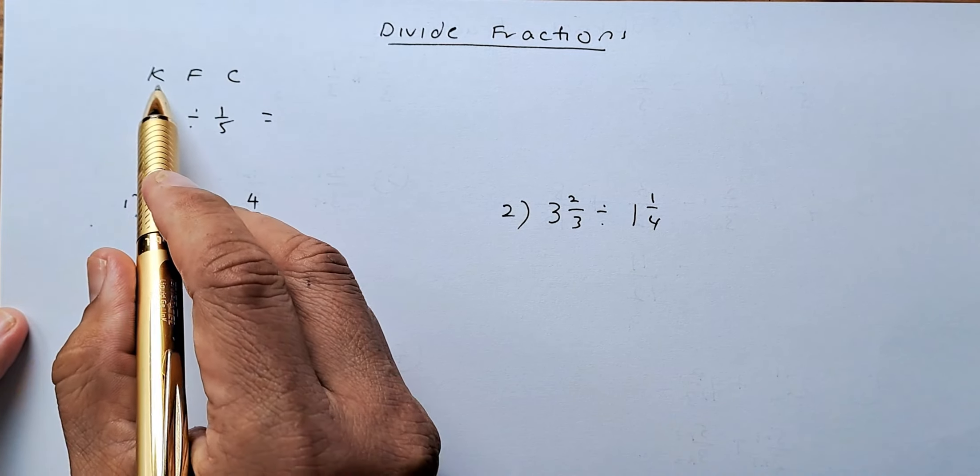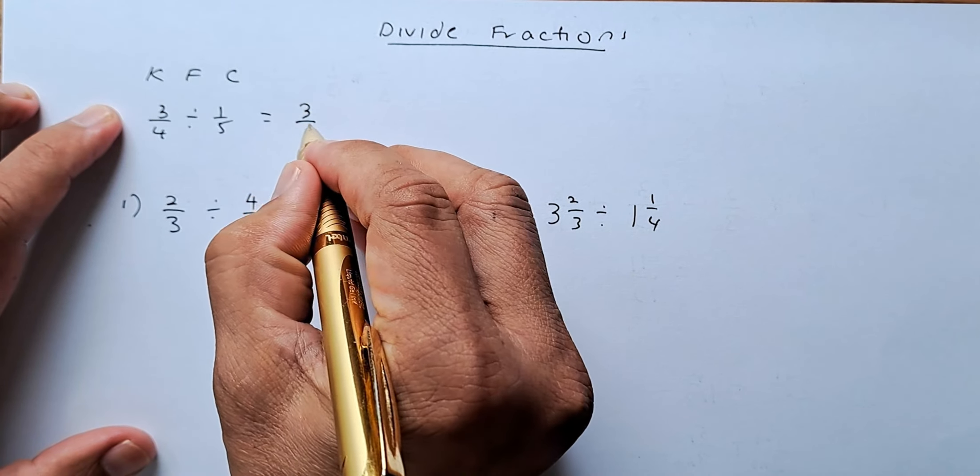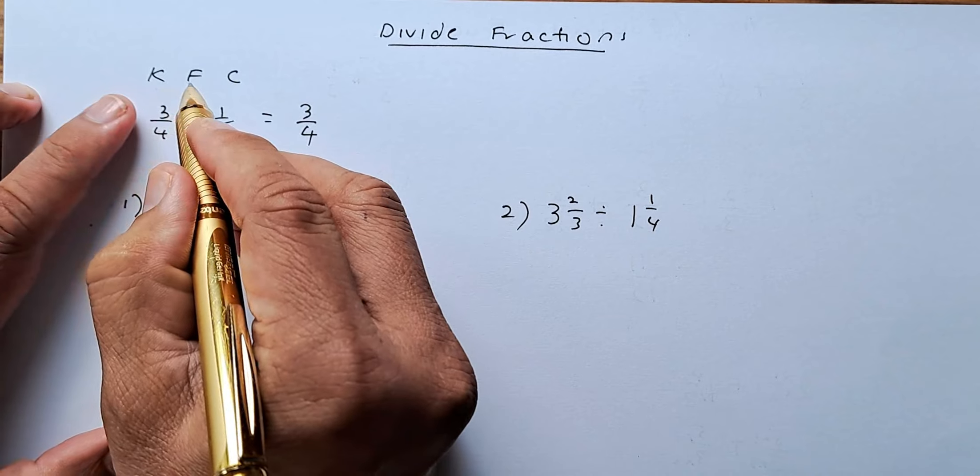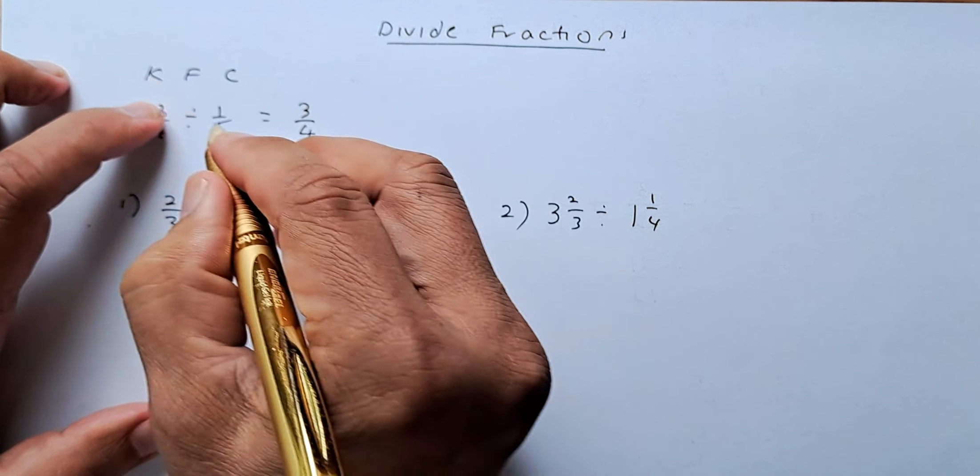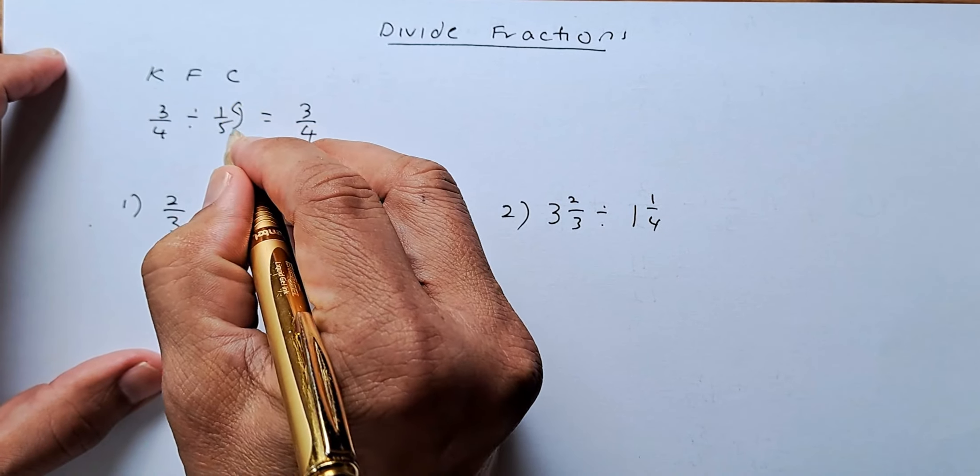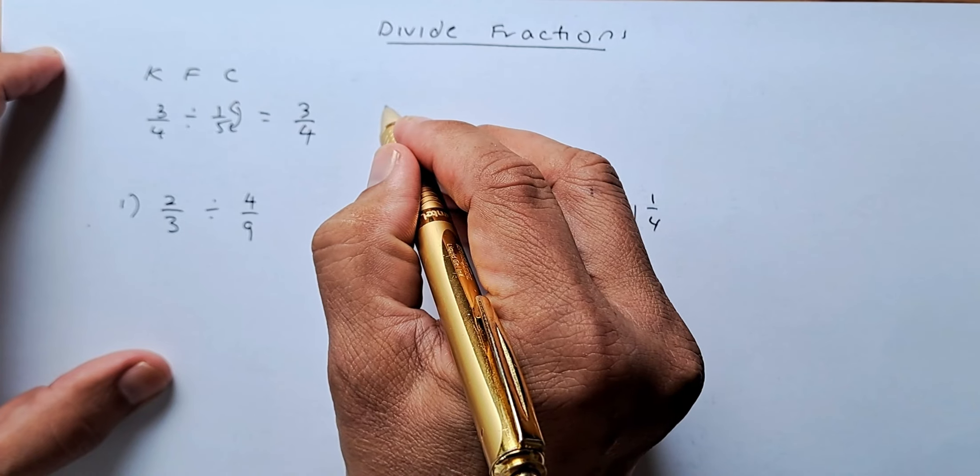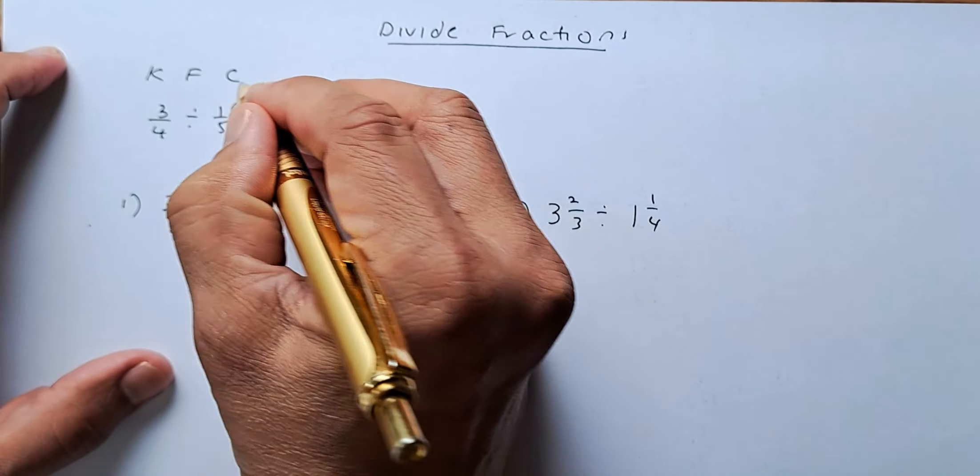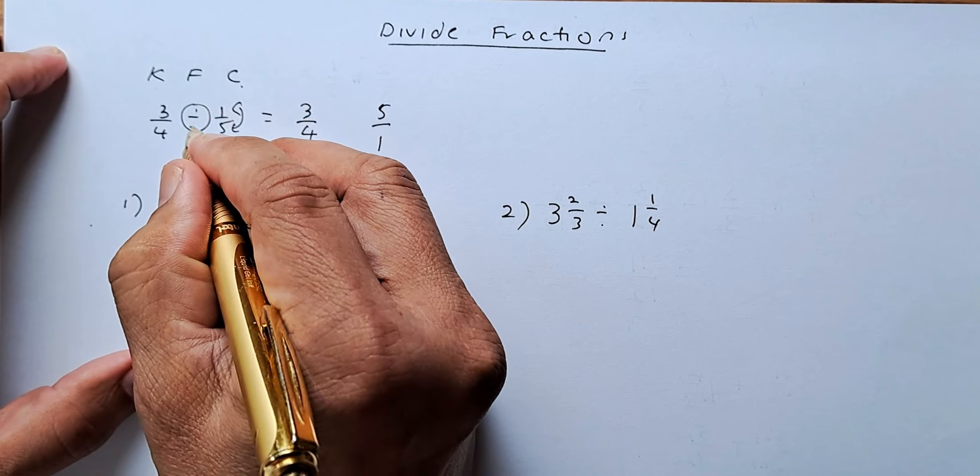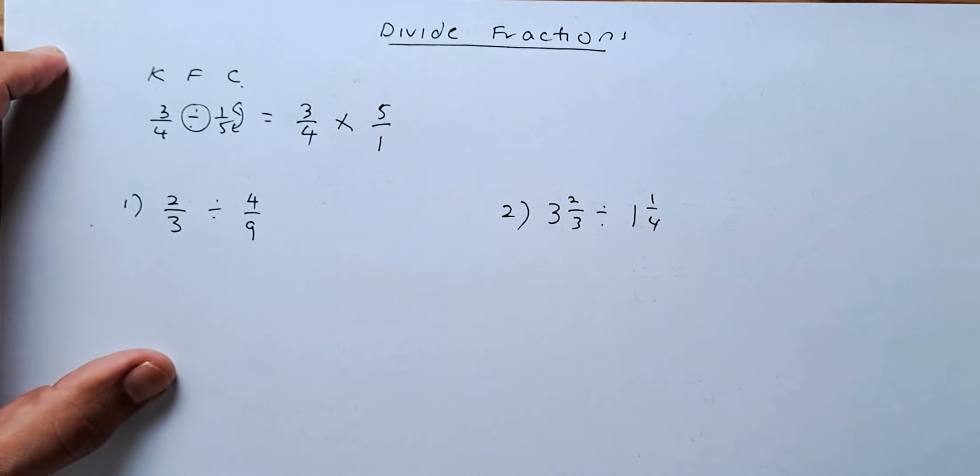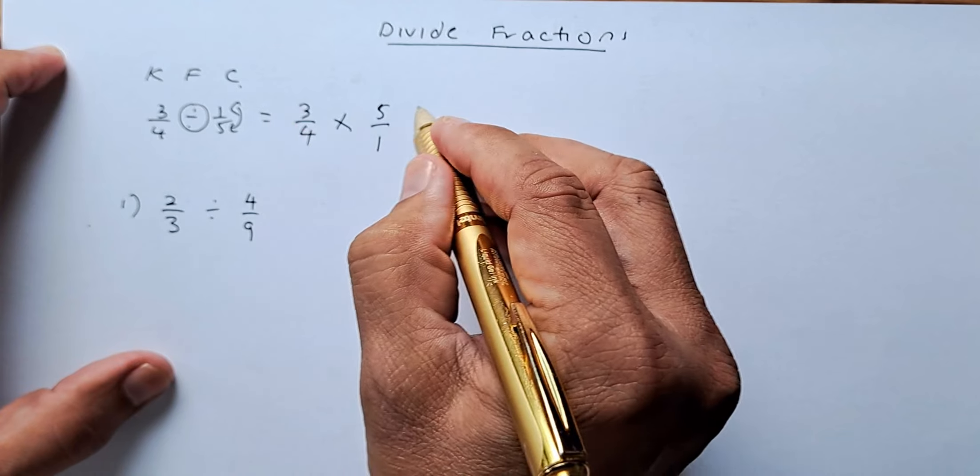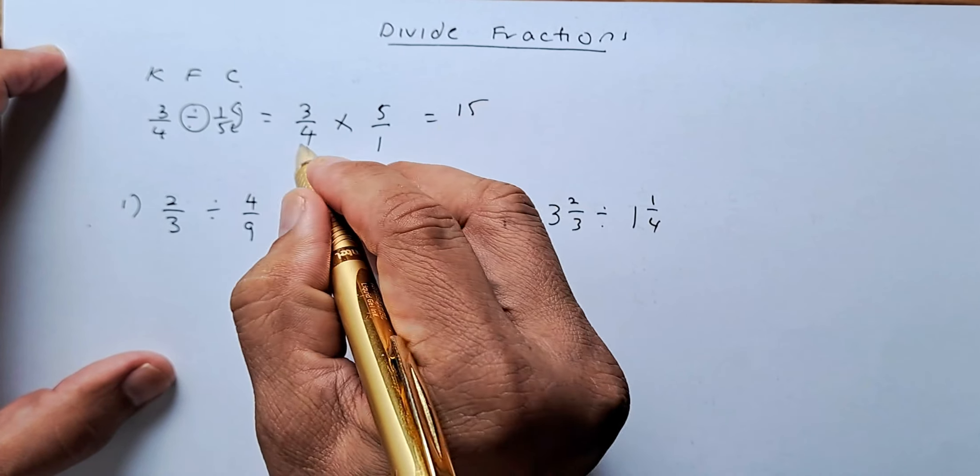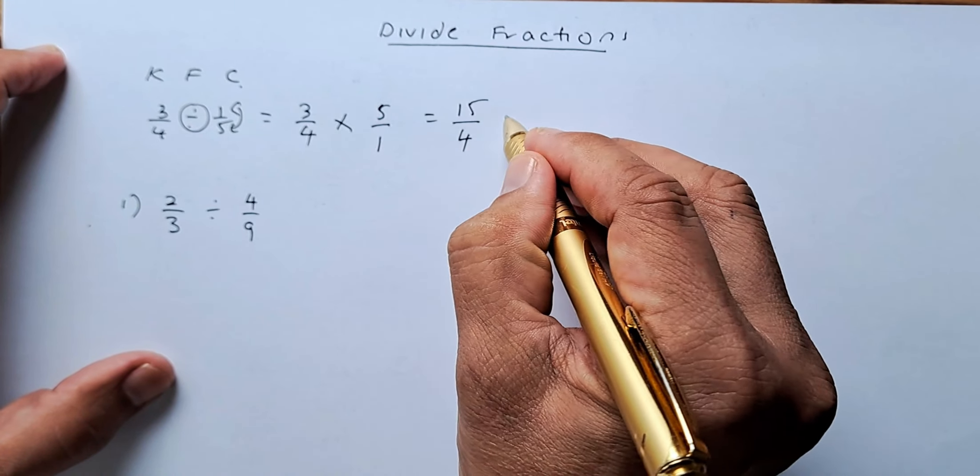So we are using the KFC method. The first fraction you keep, so 3 quarters you're going to keep. The second fraction you're going to flip. Flip means 5 goes up and 1 comes down. So 1 over 5 becomes 5 over 1, and C means change. The operation here, the divide, you're going to multiply. Once you do that, it's very simple. 3 times 5 is going to be 15. 4 times 1 is going to be 4.